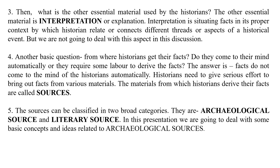Another basic question is: from where do historians get their facts? Do they come to mind automatically, or do historians require some labor to derive facts? The answer is that facts do not come to the mind of historians automatically. Historians need to give serious effort to bring out facts from various materials. The materials from which historians derive their facts are called sources. Sources can be classified into two broad categories: archaeological sources and literary sources.